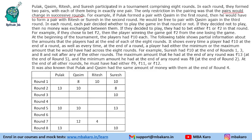Pairs would change in successive rounds. For example, if Pulak formed a pair with Kasim in the first round, then he would form a pair with either Ritesh or Suresh in the second round. He would be free to pair with Kasim again in the third round. So, if PQ is a pair, in the second round it can be PR or PS, and in the third round it can be PQ again. Pairs can recur after 2 rounds, but consecutively they must be different.